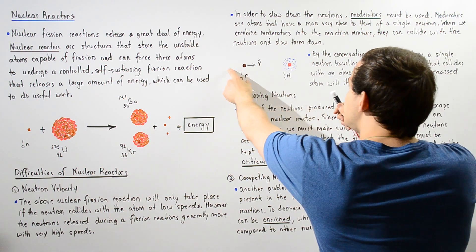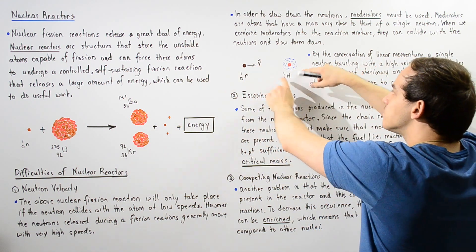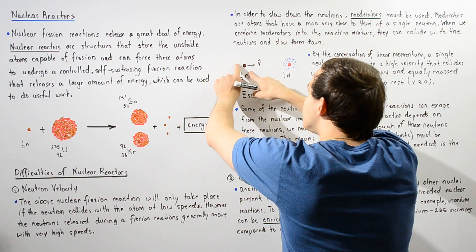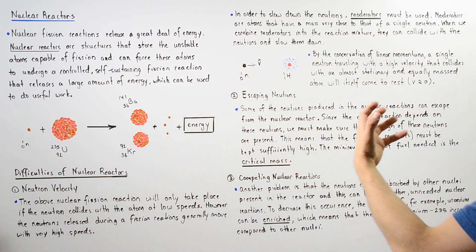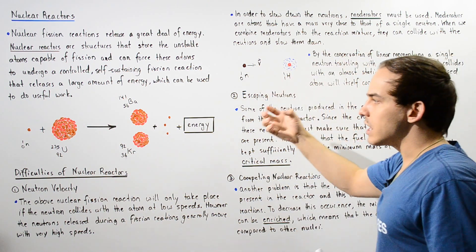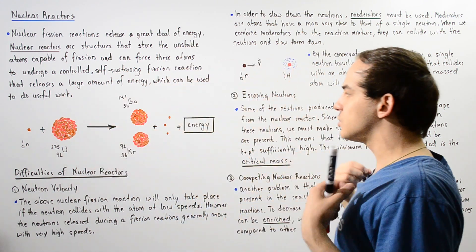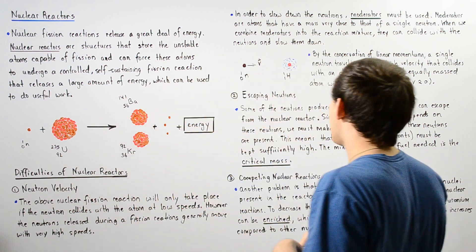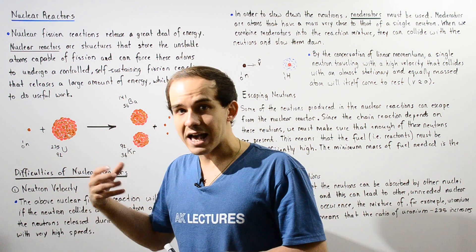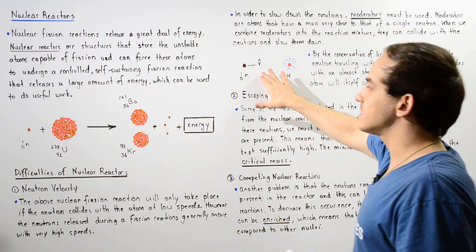When the collision between the high-velocity neutron and the stationary hydrogen atom takes place, the hydrogen atom moves away with very high velocity, while the neutron essentially comes to a stop or reaches a very low velocity. That neutron can then combine with the unstable uranium-235 isotope and form the two fragment atoms. That is exactly how we solve problem number one — we add atoms called moderators that have masses very close to the mass of our neutron.